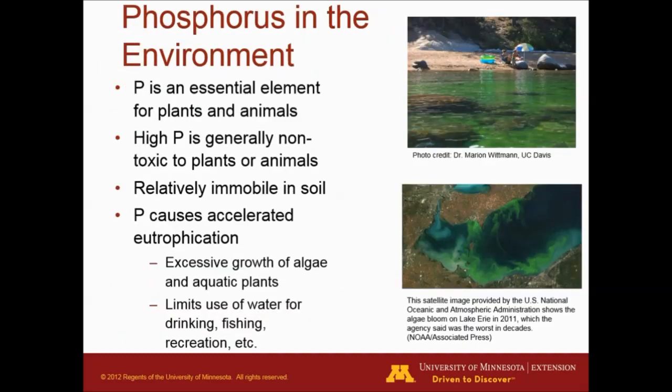Phosphorus in the environment. Phosphorus is also an essential element for plants and animals. High phosphorus is generally non-toxic to plants or animals and is relatively immobile in the soil. Phosphorus causes accelerated eutrophication, which is the excessive growth of algae and aquatic plants, and it might limit the use of waters for drinking, fishing, and recreation.